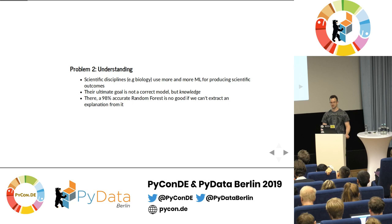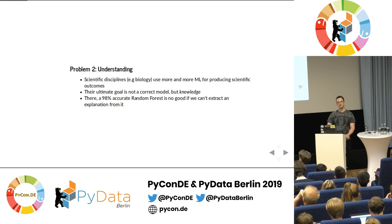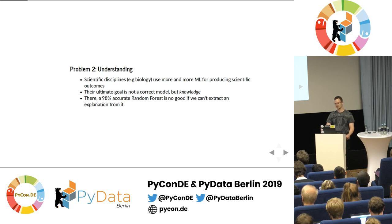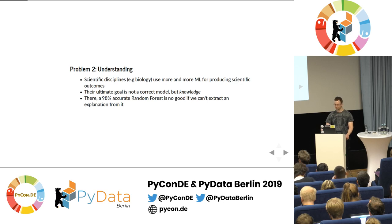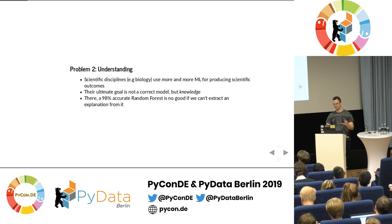The second problem is one of understanding. Complex black box models are not everything we care about. It's not enough to have a random forest that is very accurate if we can't extract an explanation from it. Sometimes we don't care only about accuracy — for example, in science like bioinformatics or computational biology. We care about knowledge; we want to understand the world better, and that's what science is.